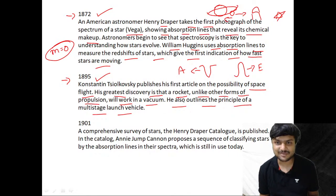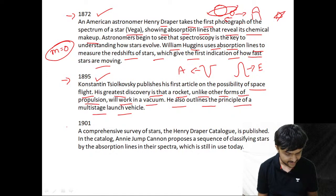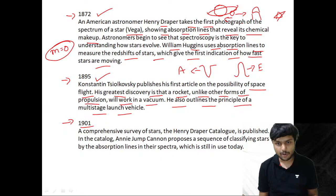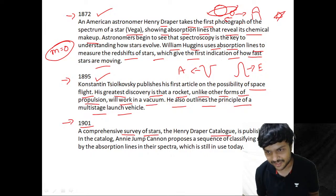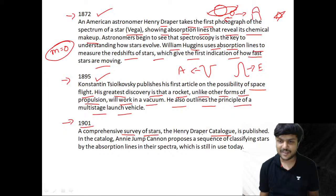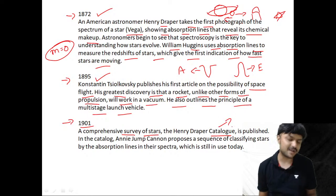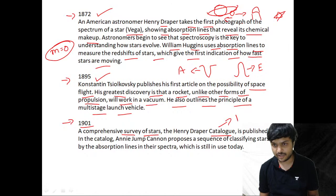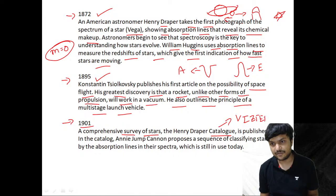In the year 1901 a comprehensive survey of stars happened. Whenever there is a survey of stars we catalog all of them. Today there are many major catalogs — there is a website called VizieR where you can find the majority of stellar catalogs. The Henry Draper catalog is one of the oldest, published in 1901.